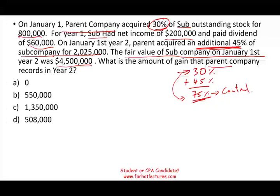Let's go through the steps. First, what happened in year one? We purchased the company for $800,000 — this is the original cost of our investment. The subsidiary made a profit of $200,000. We're going to take $200,000 times 30%, which gives us $60,000 to add to our investment.